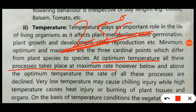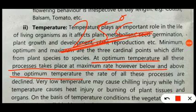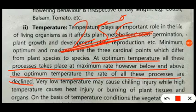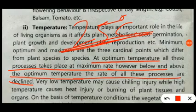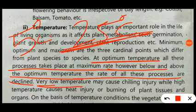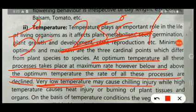However, below and above the optimum temperature, the rate of these processes declines. When temperature drops below or rises above optimum, enzymatic reactions are reduced. Very low temperature — below 5 degrees Celsius — causes chilling injury to the plant.